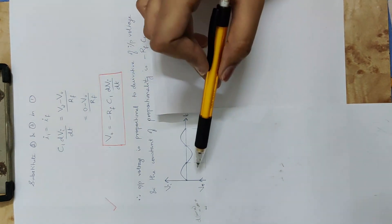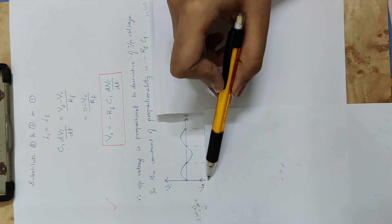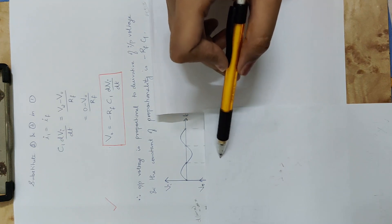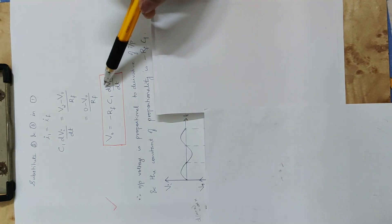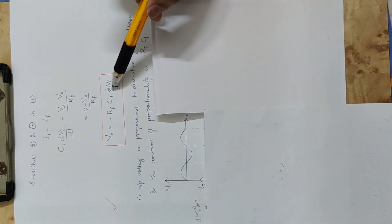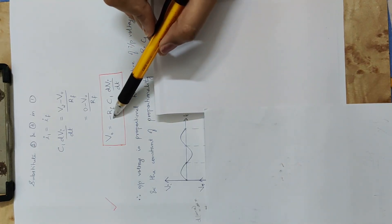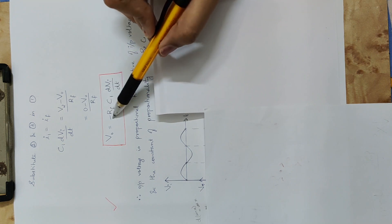Now cosine — we have to start here. Now dVi by dt is cosine. Then we have a minus sign. This constant gives a minus sign.